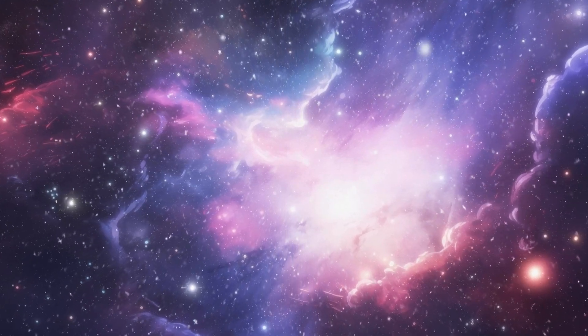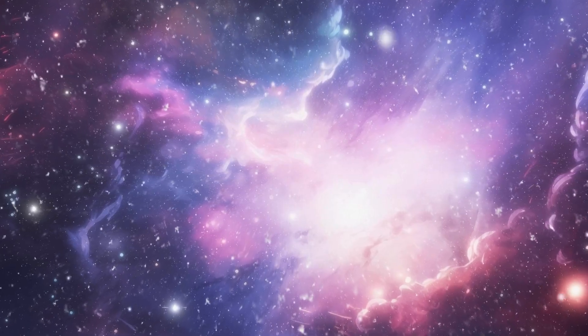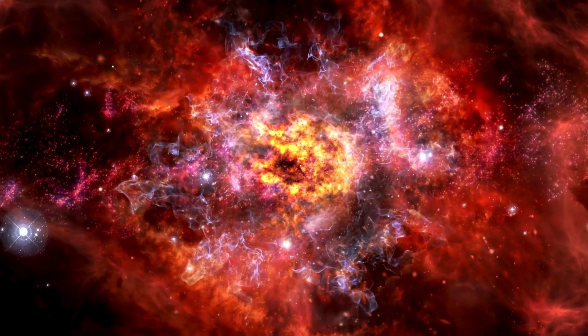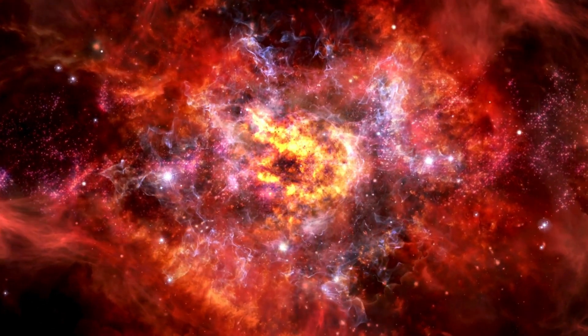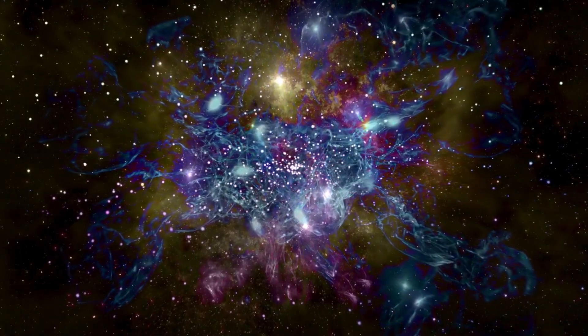Next in line were the Population 2 stars, forming a bit later but still in the universe's early days. Their original materials were light on heavy elements, especially iron. Many of them danced through their stellar life cycles, bursting into supernovas and adding more heavy elements to the universal mix.